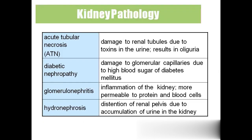Kidney pathology: Acute tubular necrosis — necrosis means abnormal death of cells, which then become hardened (like scar tissue after an injury). Acute means very recent; tubular refers to the tubules that make up nephrons. Any damage to the renal tubules due to toxins results in oliguria, meaning the patient excretes only small amounts of urine.